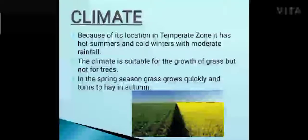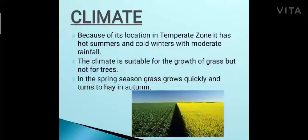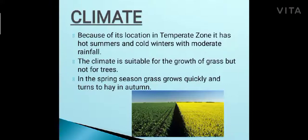The climate of prairies: being located in the temperate zone, it has hot summers and cold winters, but the rainfall is moderate. The climate is suitable for the growth of grass but not trees, because of very hot summers, very cold winters, and insufficient water due to moderate rainfall. In the spring season, the grass grows quickly but it turns into hay in autumn because of less rainfall and heat.